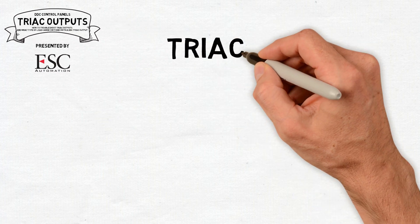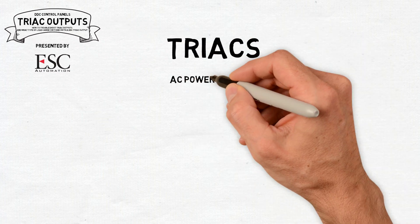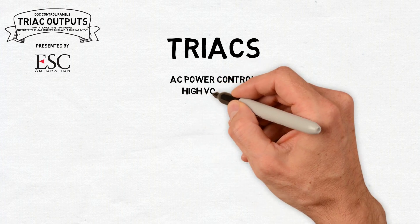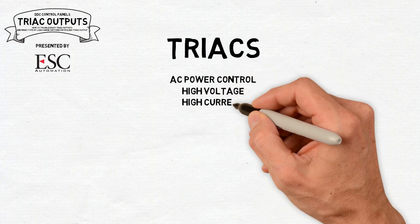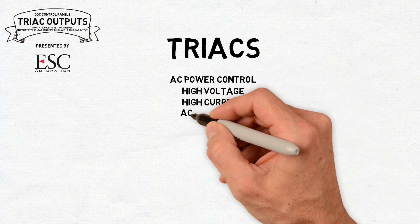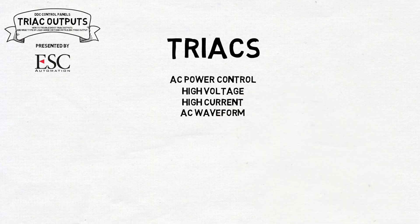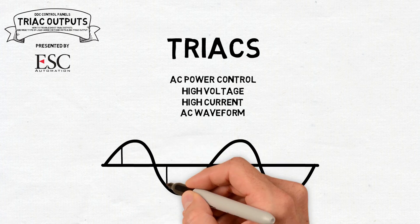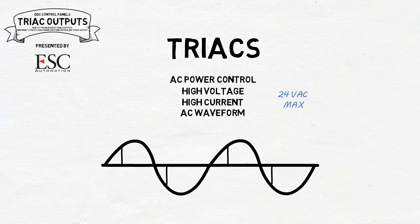Triacs are electronic components that are widely used in AC power control applications. They are able to switch high voltages and high levels of current over both parts of an AC waveform. This makes triac circuits ideal for use in a variety of applications where power switching is needed. In most DDC panels, we are switching a max voltage of 24 volts AC and a max amps of 0.5 amps.